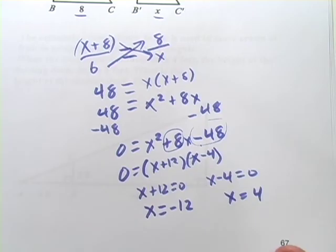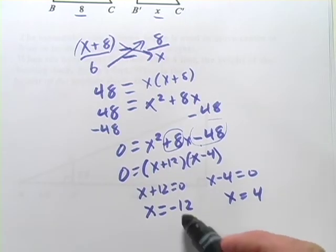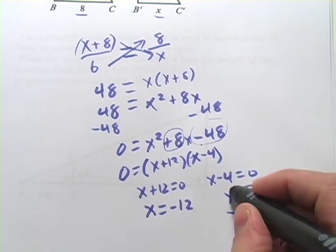Well, hopefully, if you think about it for a minute, it should be pretty obvious. We're trying to find the length of a side. So a negative number doesn't make too much sense. Negative number isn't really a length. So it's got to be X equals 4.